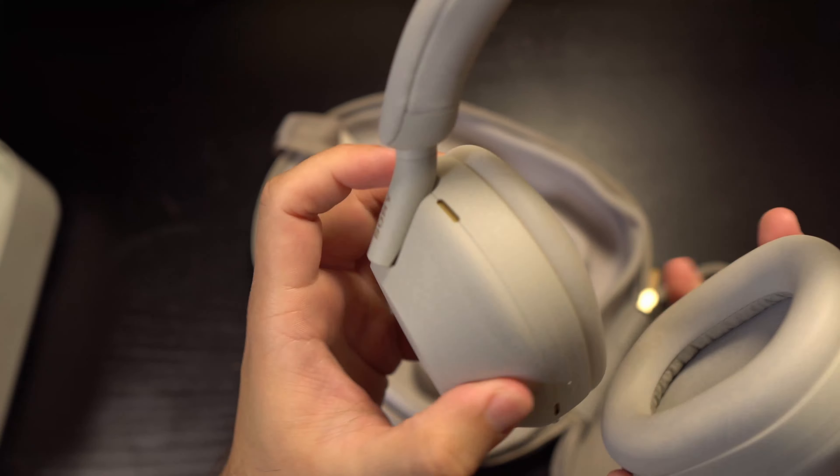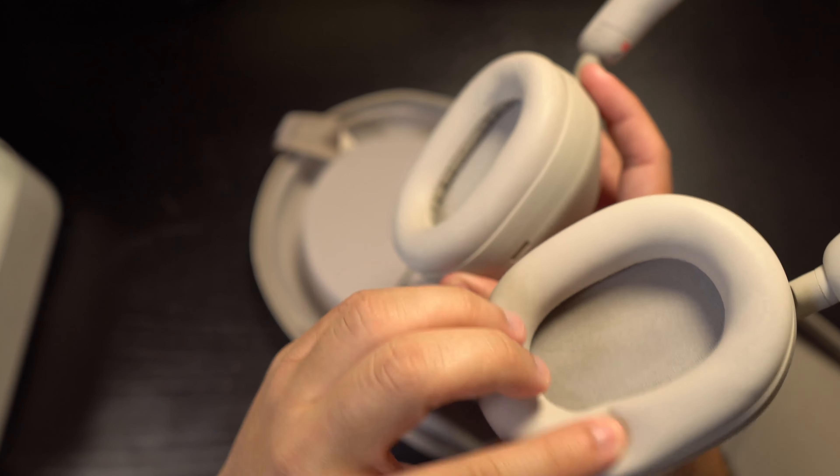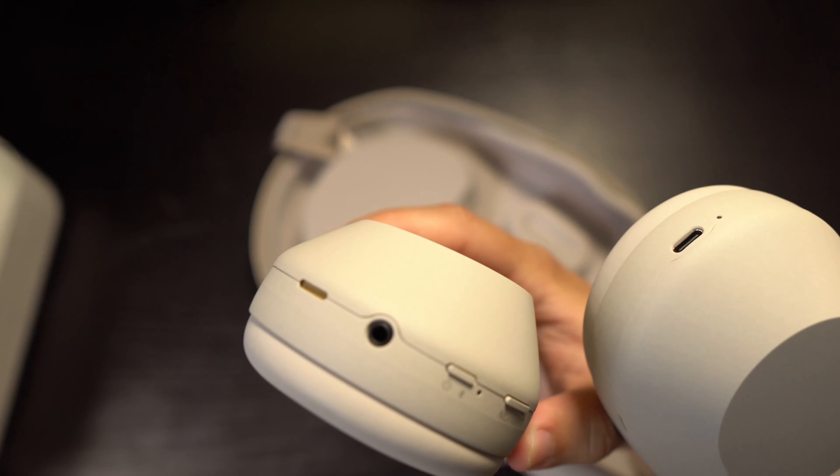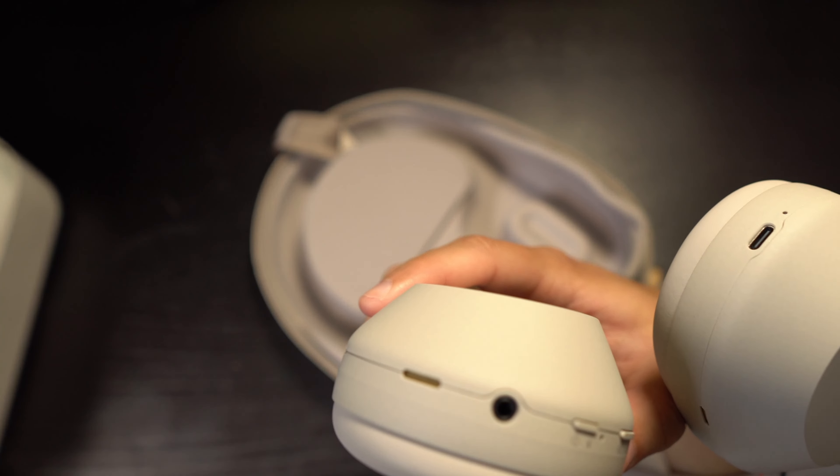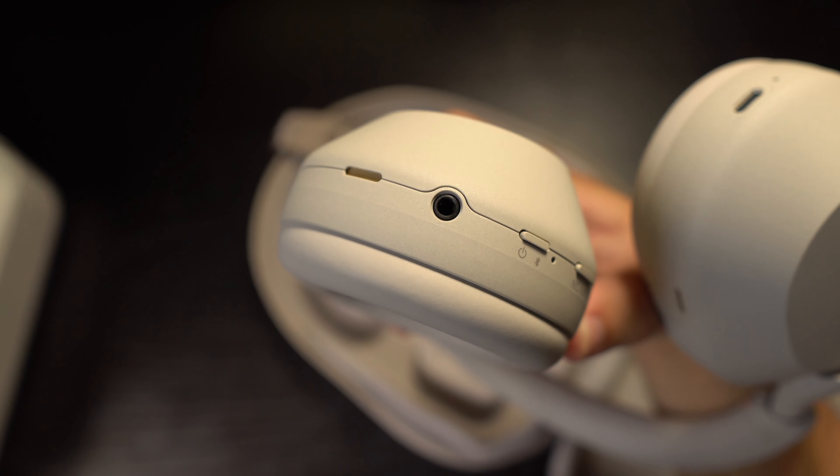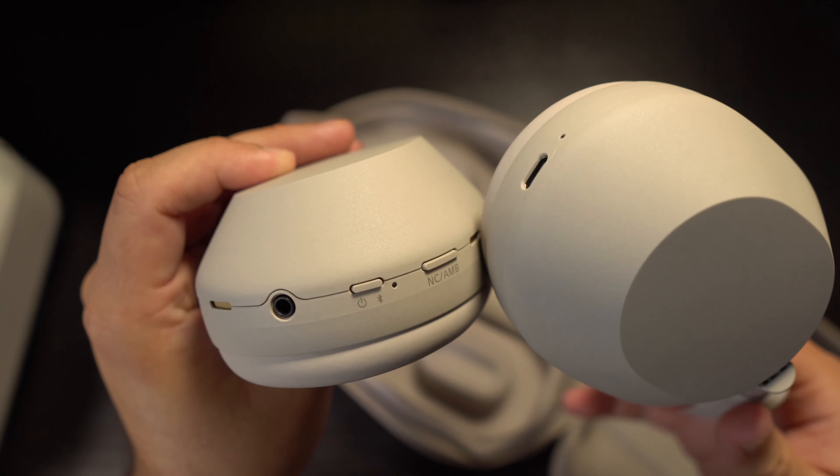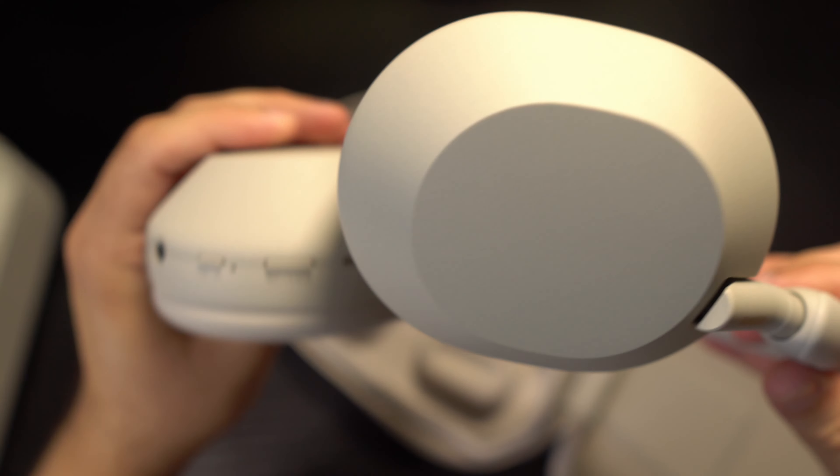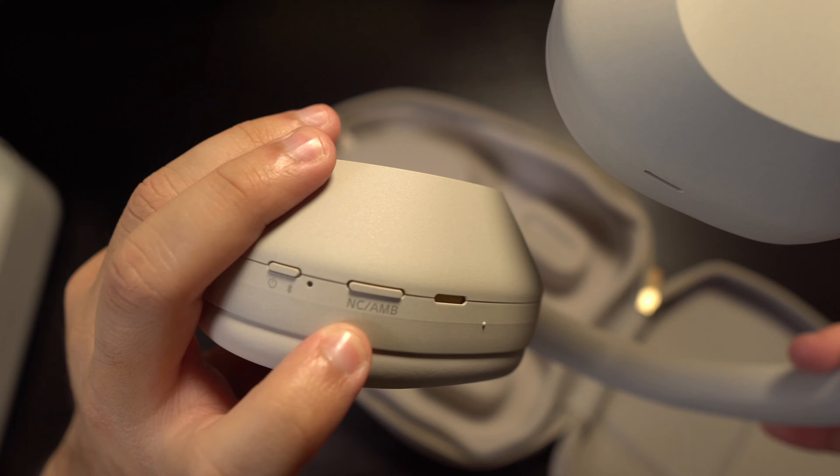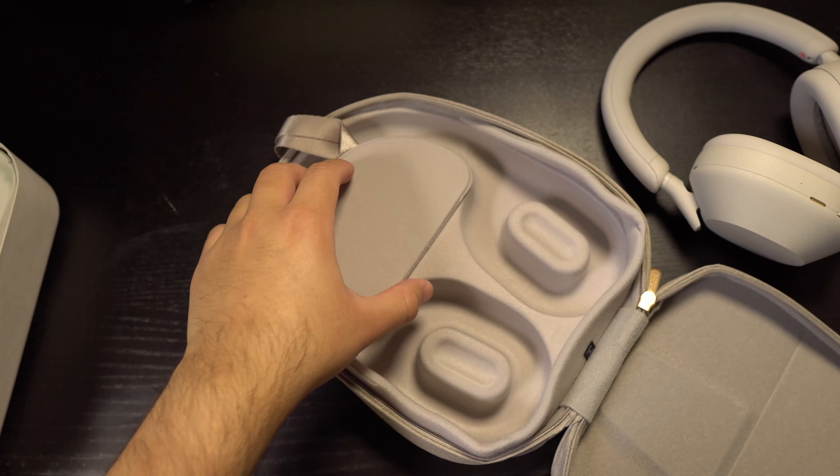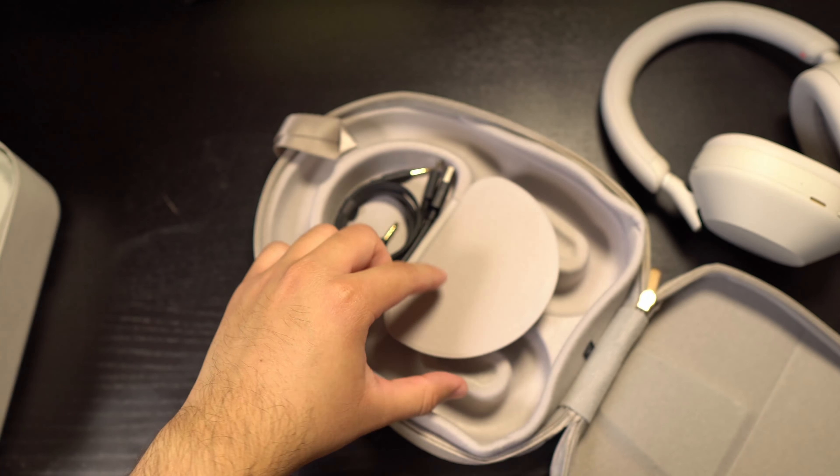And then on the left side, pretty much the same as the right side, but on the bottom, on the bottom of the left cup, you have, it looks like a aux cord, an on and off and Bluetooth connectivity button and a noise cancellation. Maybe this AMB could mean ambience mode going further into the carrying case here.